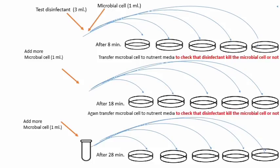Aur jo first two steps hain — jisme humne 5 petri dishes li thi — unme se at least 3 petri dishes mein koi bhi microbial growth observe nahi honi chahiye. Is tarah aapke saamne discuss kiya gaya phenol coefficient test, Chick Martin test, aur Kelsey Sykes test. I hope this video will help you to understand the evaluation of disinfectants.